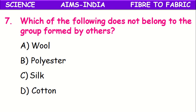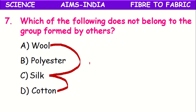Which of the following does not belong to the group formed by the others? The fibers given are wool, polyester, silk, and cotton. Wool, silk, and cotton are all natural fibers, whereas polyester is the only artificial fiber among these. So polyester does not belong to the group formed by the other three natural fibers.